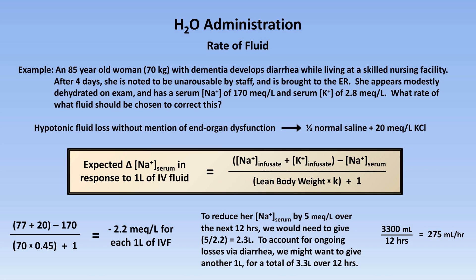The second reason is more of a problem. For all the precision that the use of these equations imply, the step where we attempt to account for ongoing fluid losses is nothing more than an educated guess. In this woman's case, maybe her diarrhea will suddenly worsen or suddenly resolve, and that estimate of 1 liter of ongoing loss via the stool over the next 12 hours may be wildly inaccurate.